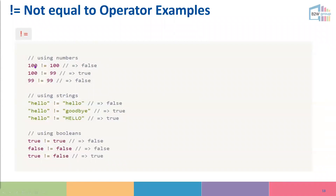For not-equal-to operator examples: because we have the not symbol, 100 not-equal-to 100 outputs false even though they're equal — the NOT flips it. 100 not-equal-to 99 outputs true because they aren't equal, and the NOT keeps it as true. 'hello' not-equal-to 'hello' is false because it was true and gets flipped; 'hello' not-equal-to 'goodbye' is true because it was originally false and gets flipped. With booleans: true not-equal-to true is false; false not-equal-to false is false; but where it came out false before, the NOT symbol flips it back to true.